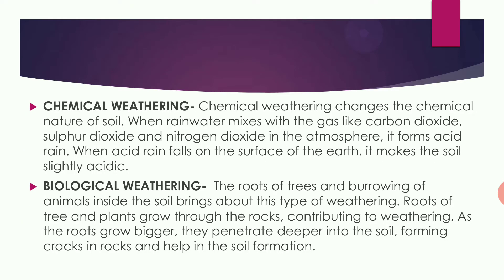Chemical weathering means a change in the chemical nature of the soil. When rainwater mixes with gases like carbon dioxide, sulfur dioxide, and nitrogen dioxide in the atmosphere, it forms acid. This acid falls with the rain, called acid rain. When acid rain falls on the surface, it makes the soil slightly acidic, changing its chemical nature.